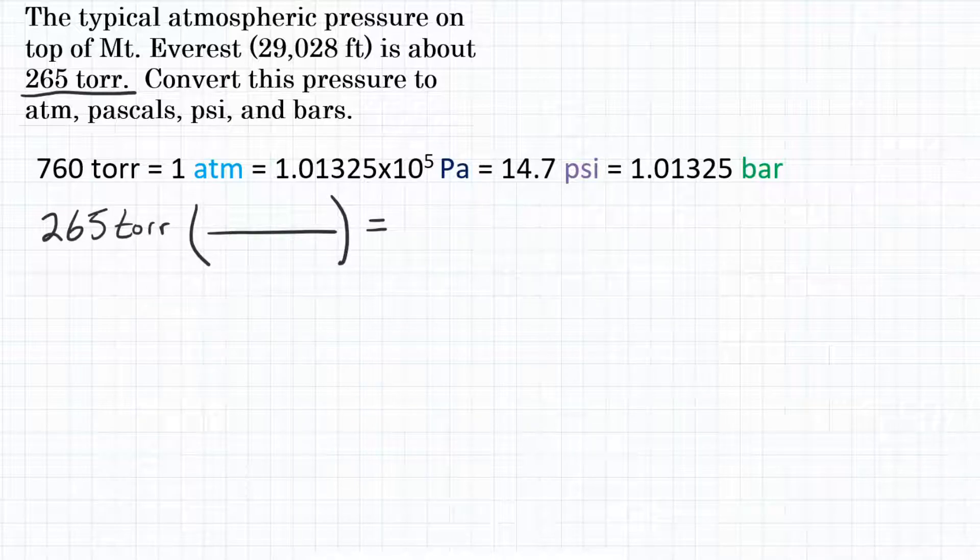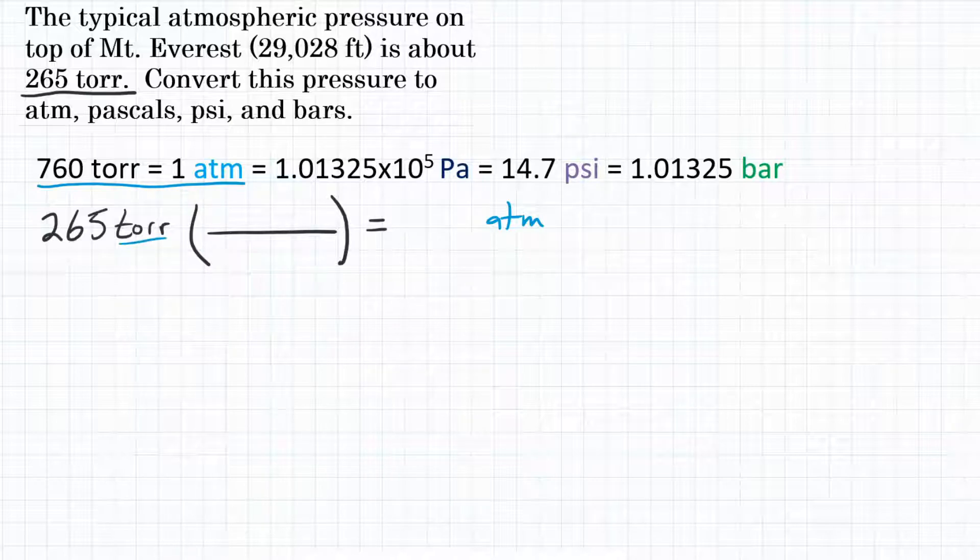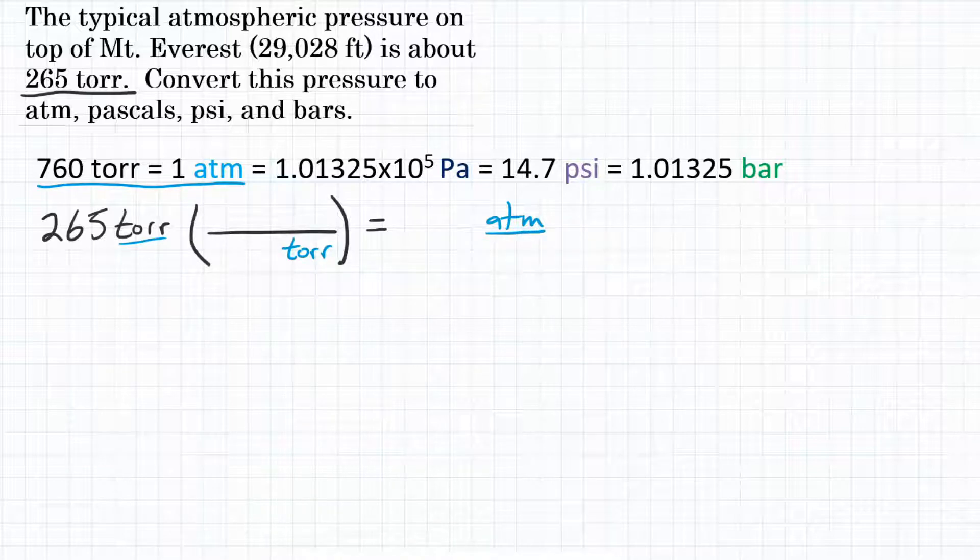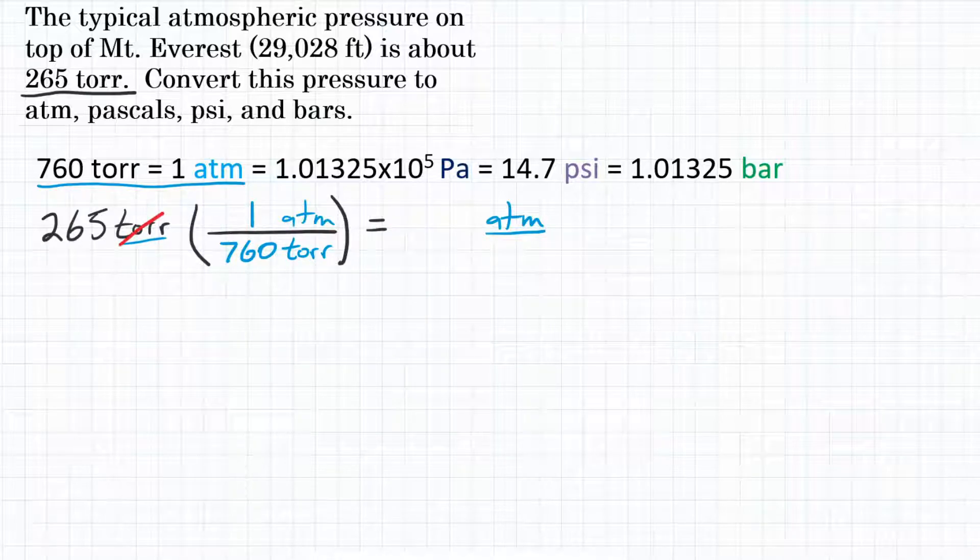So in this first instance, we are wanting to convert to atmospheres. For our conversion factor, we need the relationship between these two units, torr and atmospheres. We're going to use the relationship that 760 torr is equal to one atmosphere and that is what we will put in our conversion factor. Since we're starting with torr here, torr is going to go on the bottom so that it cancels out and since we want to end up with atmospheres, atmospheres will go on top. What is our relationship? Well, 760 torr is equal to one atmosphere. So this problem is set up. Looking at our units, torr is going to cancel out because it's on top and on bottom and we will be left with the unit of atmospheres. So now we can do the math.